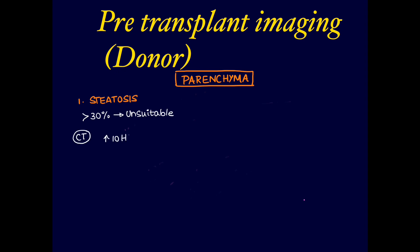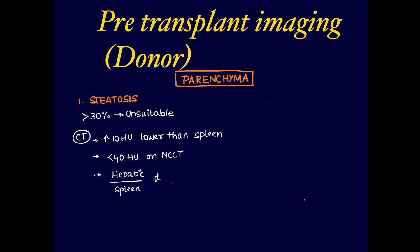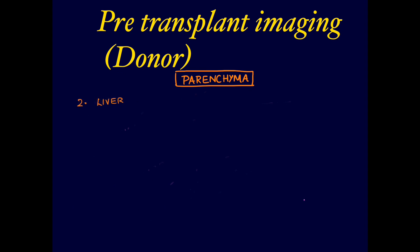Criteria for fatty liver on CT include: more than 10 HU difference or lower HU than the spleen, liver showing less than 40 HU on non-contrast CT, and a hepatic-to-spleen attenuation ratio of less than 0.8. On MRI, more than 30% signal drop on fat-suppressed images like Dixon sequences is considered fatty liver.